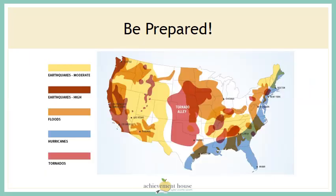Let's look at one more map and talk about being prepared. If you look at the key to this map, it tells you what each color signifies: earthquake moderate risk, earthquake high risk, flood zones, hurricanes, and tornadoes. We've already talked about Tornado Alley. Let's look at the flood zones — this orange color here. If we compared that to our landform map, we'd see that the Mississippi and Missouri Rivers run right through that area. That's why it's a high flood zone, so if you lived there, you'd want flood insurance, maybe sandbags, and you'd watch the weather for flood warnings.